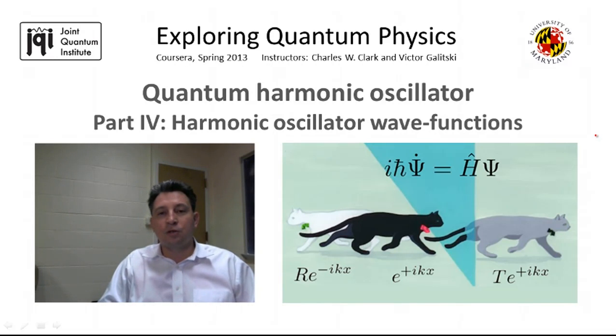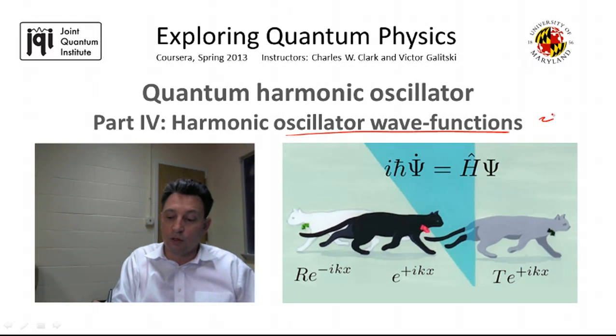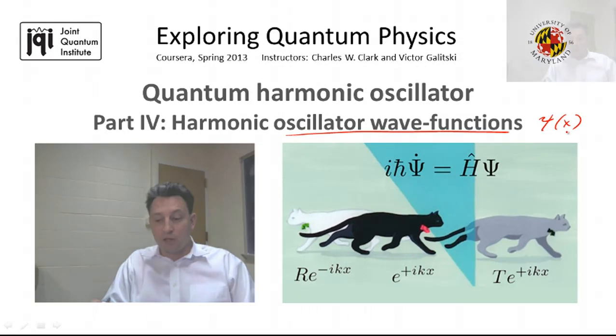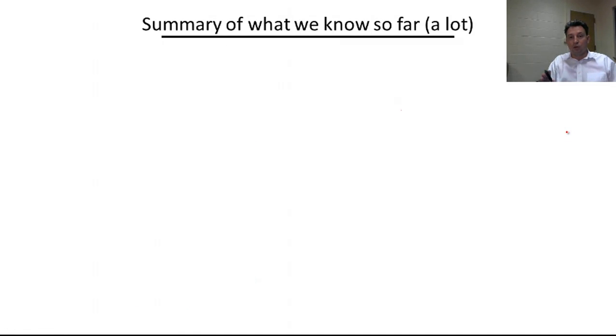In this last video of this lecture, I'm going to derive the harmonic oscillator wave functions, but I will do so without even writing down the Schrodinger equation. We will rely entirely on the algebraic solution I presented that took advantage of the creation and annihilation operators. It turns out that they are very helpful in determining the explicit form of the oscillator wave functions psi of x. But before we derive these wave functions, let me summarize what we know so far, which is actually a lot.